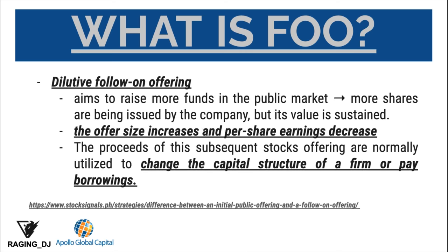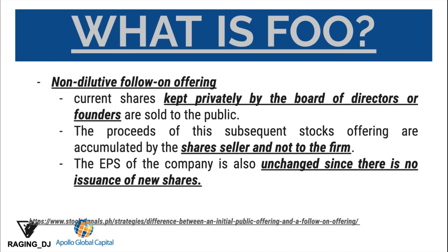In terms of the FOO, we again have dilutive and non-dilutive. For dilutive, it aims to raise more funds in the public market. More shares are being issued by the company but its value is sustained, so the offer size increases and the per share earnings decrease. The proceeds of the subsequent stock offering are normally utilized to change the capital structure of a firm or pay borrowings. For the non-dilutive follow-on offering, these are usually current shares kept privately by the boards of directors or founders which are sold to the public. The proceeds are accumulated by the share seller and not by the firm, and the earnings per share of the company is also unchanged since there is no issuance of new shares.